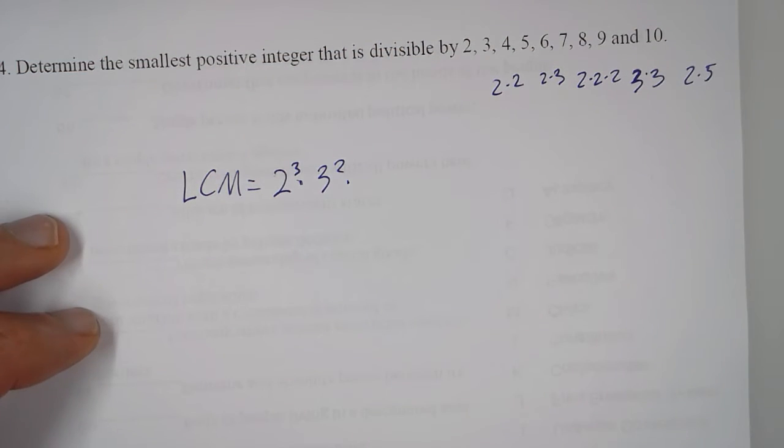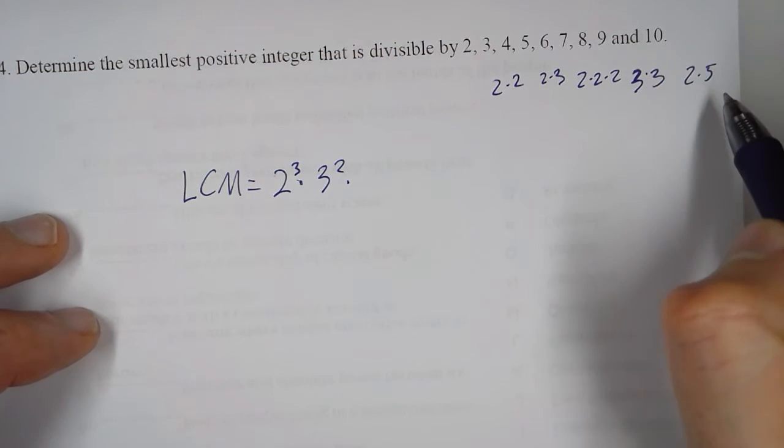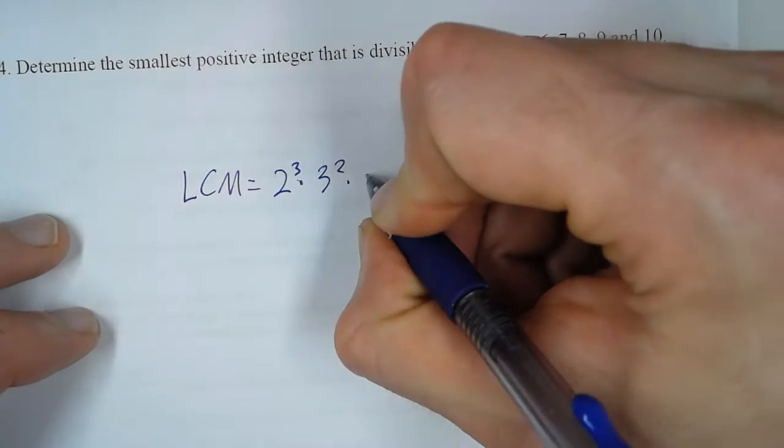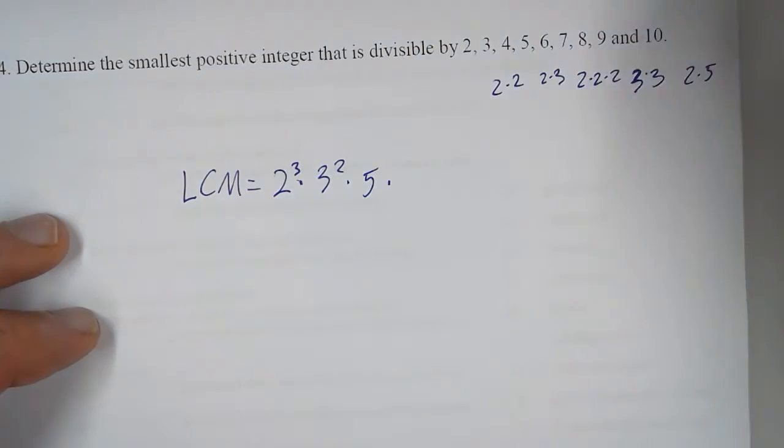What's the most number of 5s that any number has? 1. What's the most number of 7s? That'd be 1.